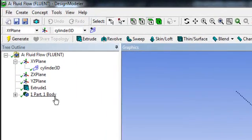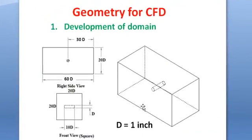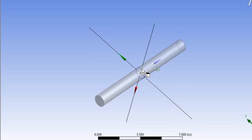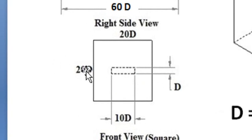In the part and body option, you can see there is one part and one body. Now we need to make our domain. The domain sketch follows the same process. In the 2D view, the length of the domain is 60d with the cylinder center at the center, the width is 20d, and the height is also 20d. So the extrusion will be 10d in the positive Z direction and 10d in the negative Z direction. Go to the XY plane and make it normal.